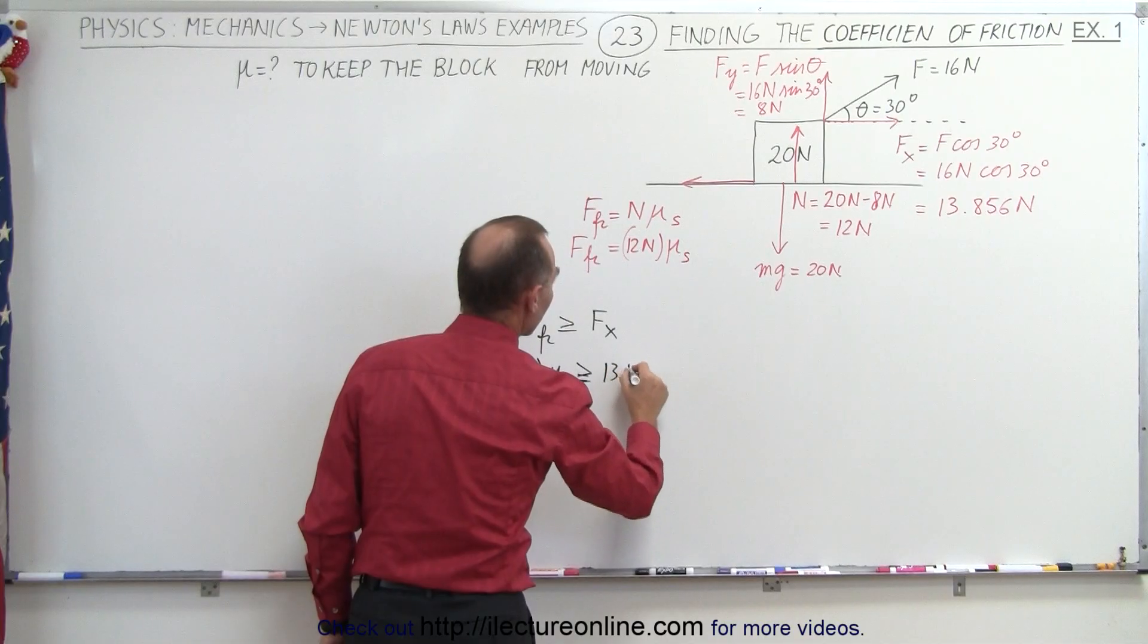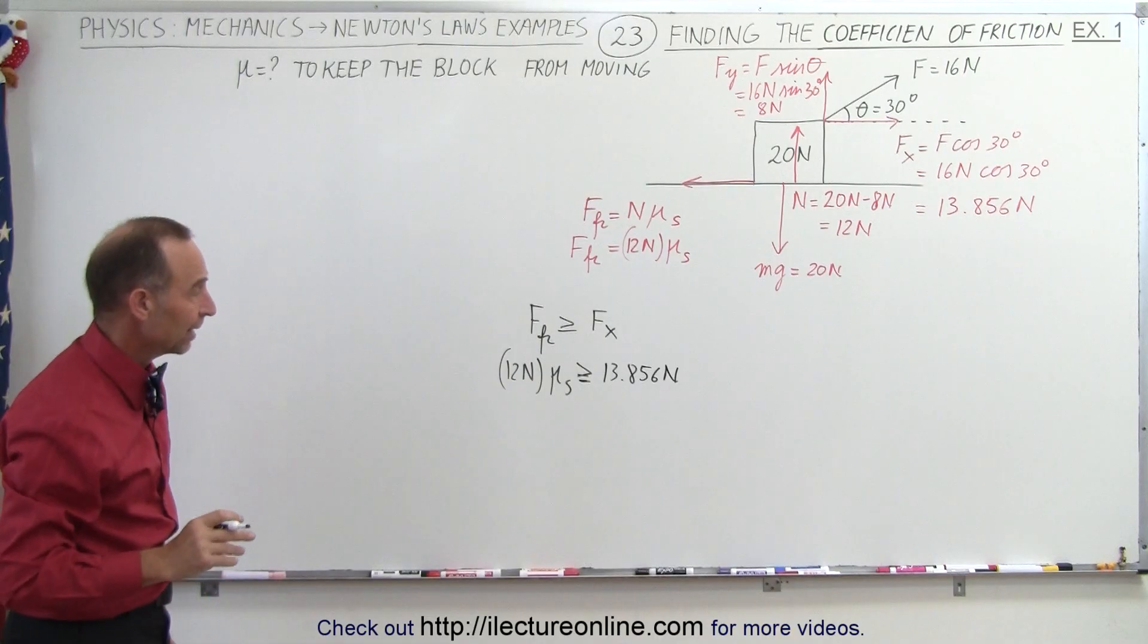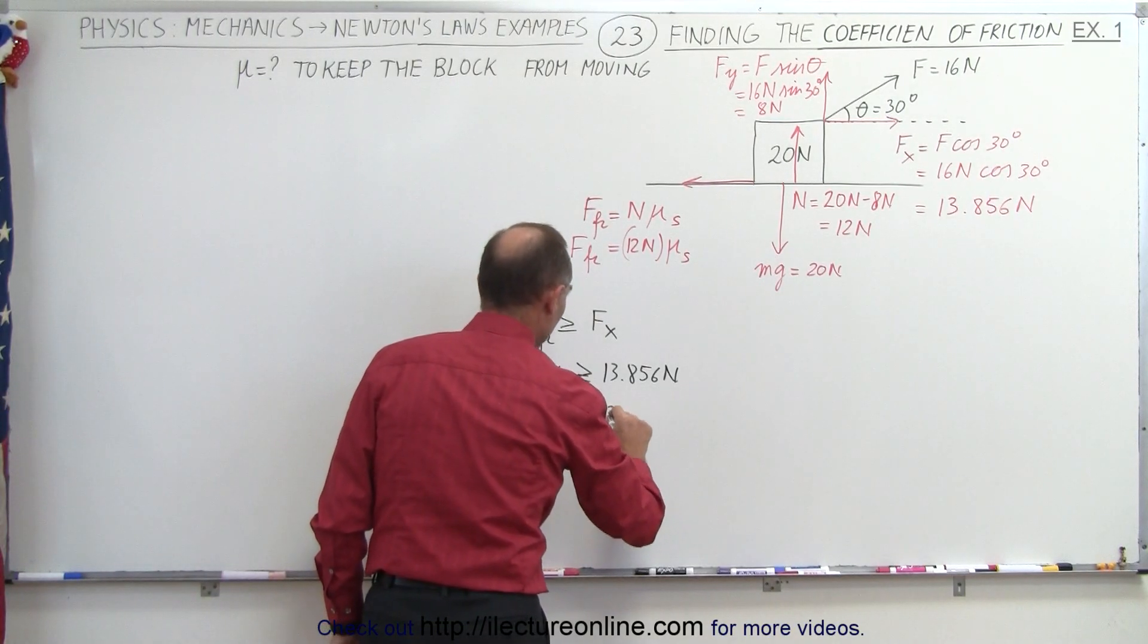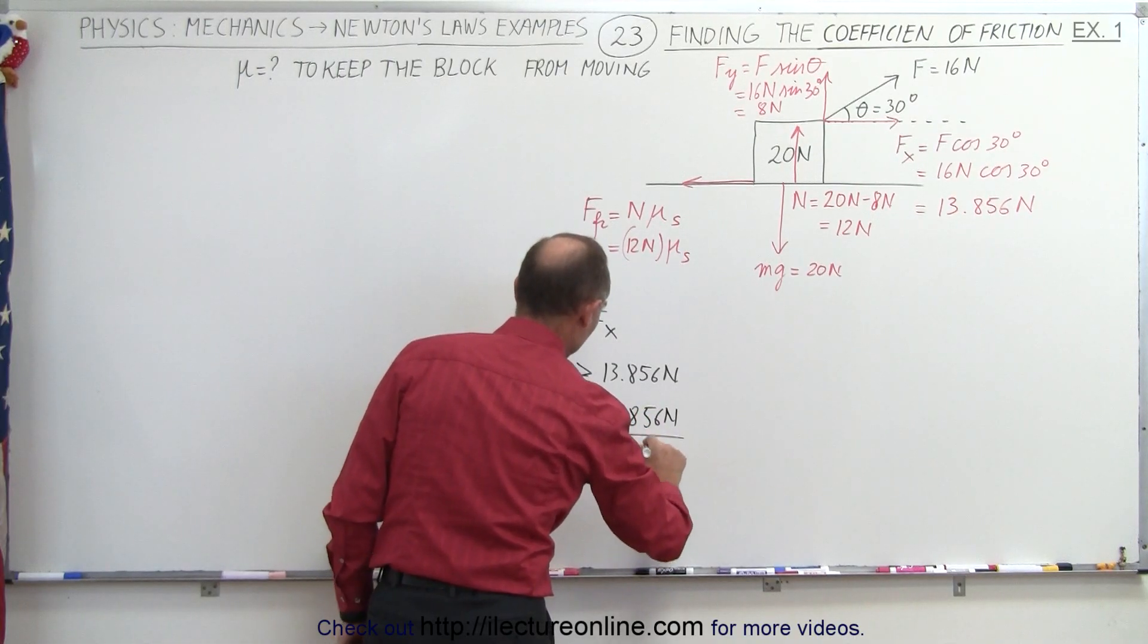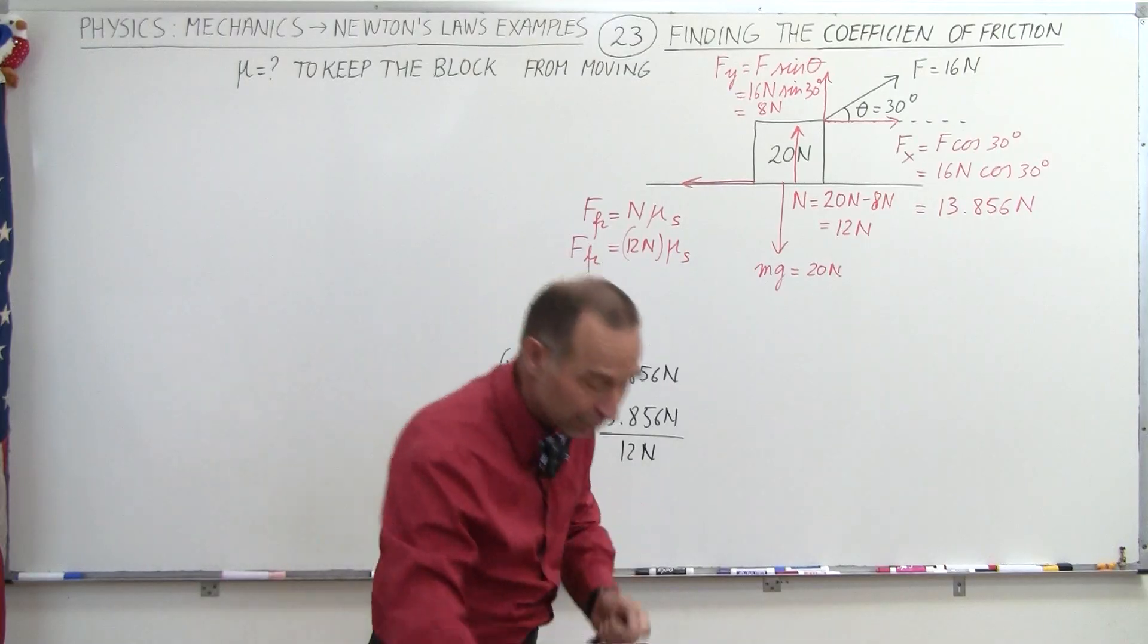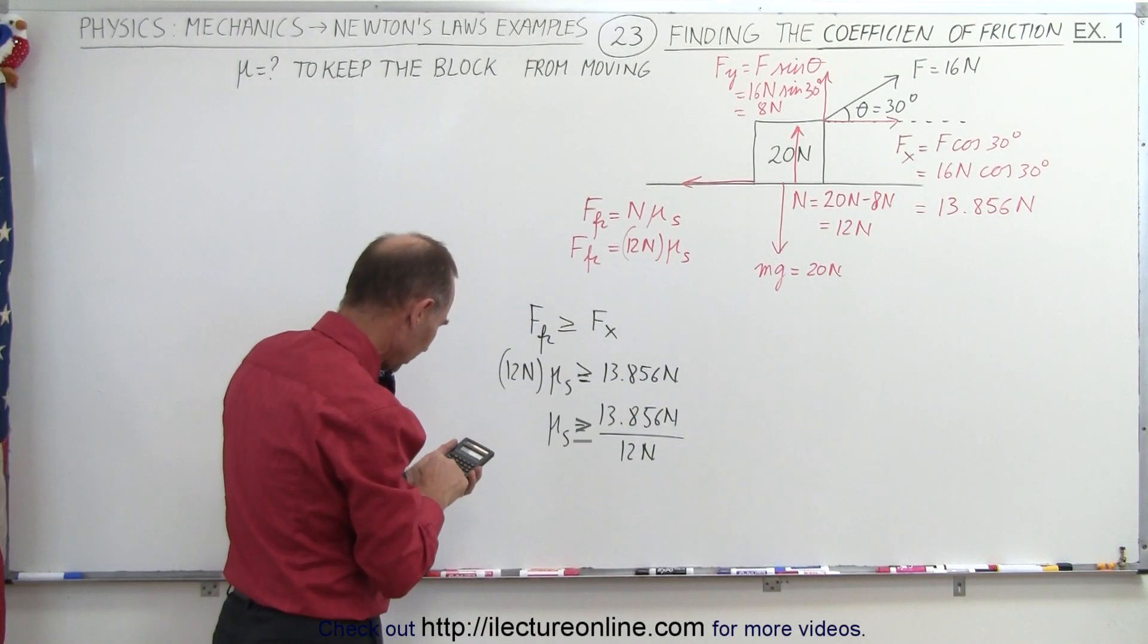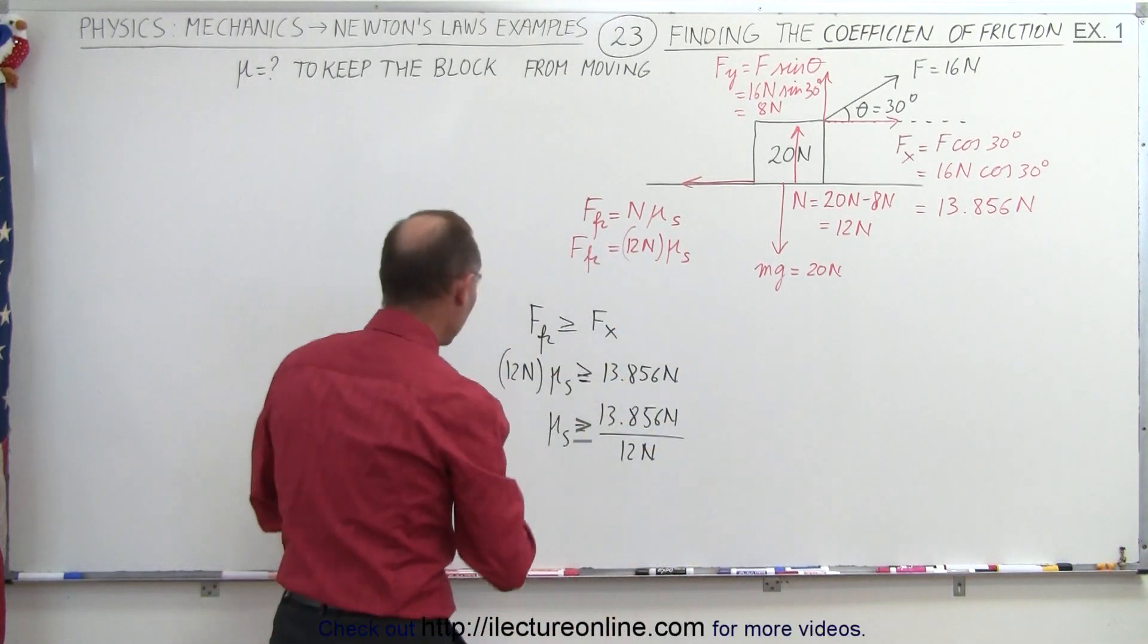This means the coefficient of friction must be 13.856 newtons divided by 12 newtons. Right away you can see that would be a value greater than 1, which is an unlikely scenario. Dividing this by 12 we get 1.155.